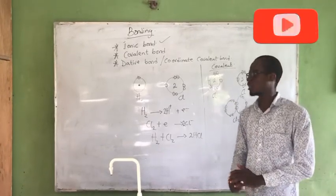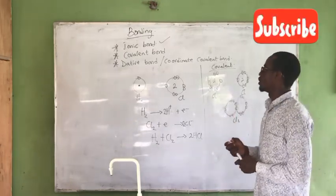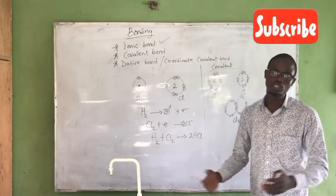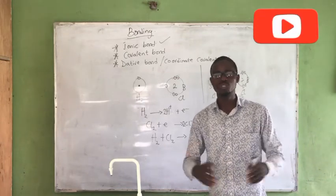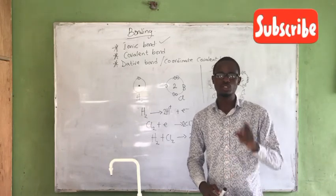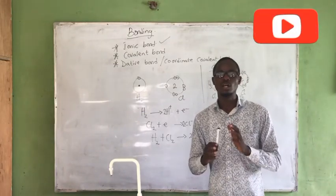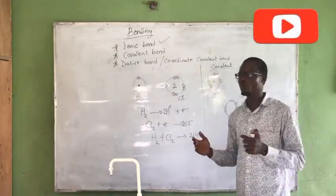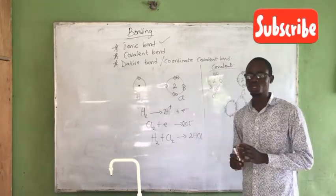Now let's look at the dative bond, which is very similar to the covalent bond. The difference is that in a covalent bond, both atoms involved in bonding contribute electrons to form the shared pair. But in the case of a dative bond, only one of the atoms contributes both electrons of the pair. That one atom provides the lone pair that forms the bond. That is what makes it a dative bond. These three types of bonds all exist between atoms.